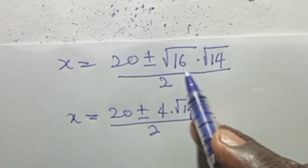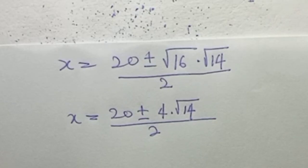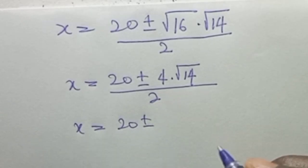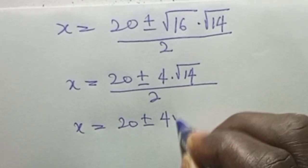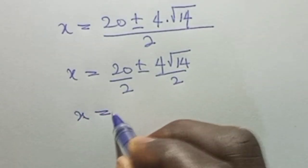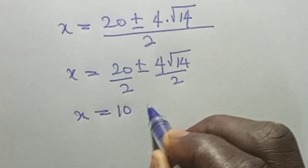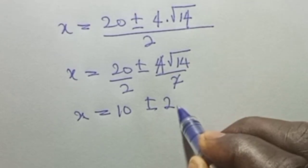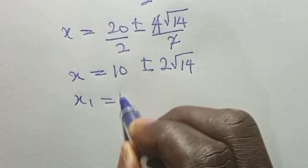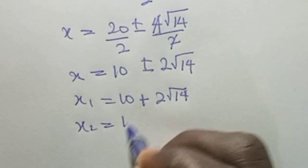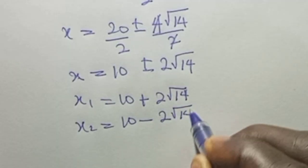Since 16 is a perfect square and 14 is not, we retain the square root of 14. So s equals 20 plus or minus 4 root 14, all over 2. Dividing through by 2: s equals 10 plus or minus 2 root 14. Therefore, s1 equals 10 plus 2 square root of 14, and s2 equals 10 minus 2 square root of 14.